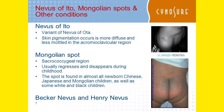Nevus of Ito is actually a variant of Ota. From the Ota that occurs around the eye, a variant becomes Nevus of Ito, which occurs on the shoulder. Specifically, it occurs in the acromioclavicular region — what we commonly call the shoulder region.